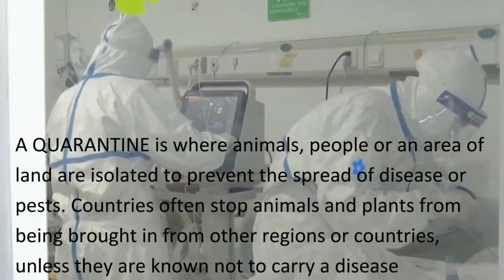A quarantine is where animals, people, or an area of land are isolated to prevent the spread of disease or pests. Countries often stop animals and plants from being brought in from other regions or countries, unless they are known not to carry a disease.